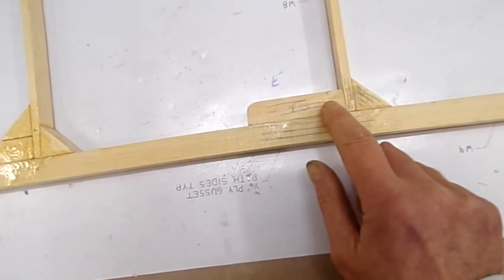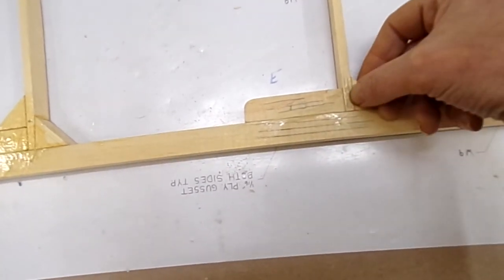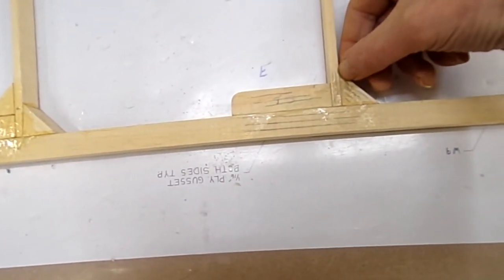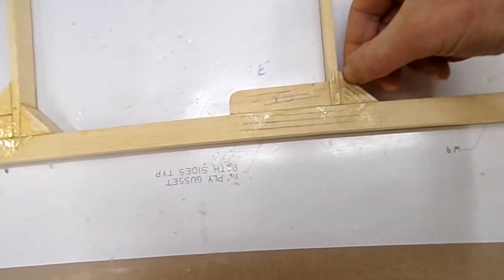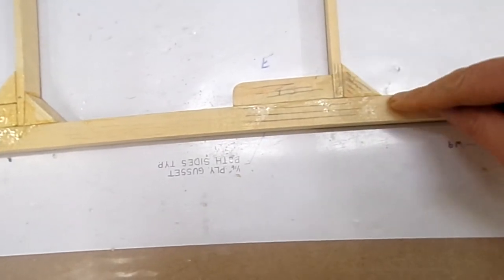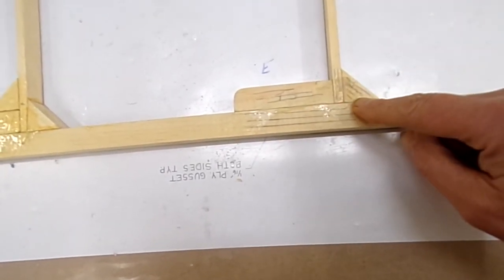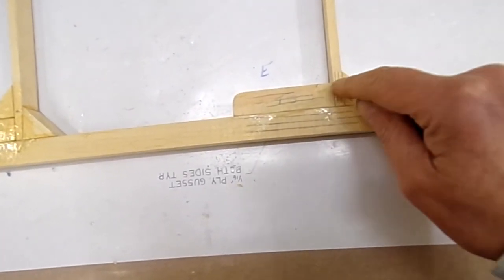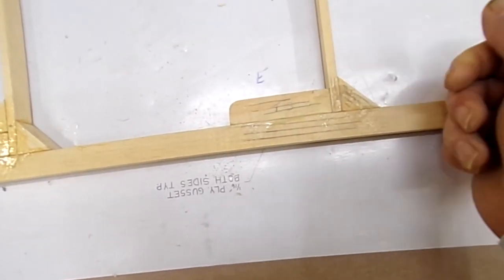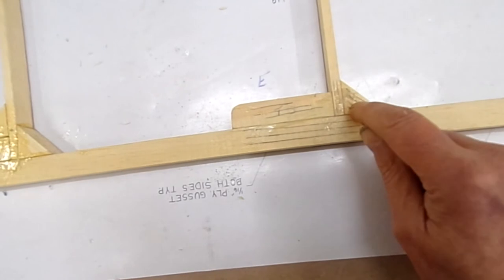So the spar's got the grain going horizontally, same as this. The rib's got the grain going vertically. But the blocks, so all the triangular blocks, have the grain going diagonally so that it's going from one piece of structure to the other straight across rather than being in a format like that or vertical where you could have a section of it shear out. That makes the block a lot stronger.